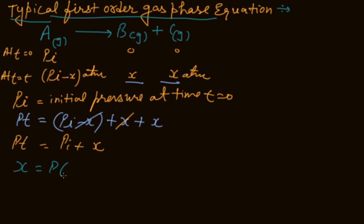So X equals PT minus Pi. We'll use this to find PA at time T.